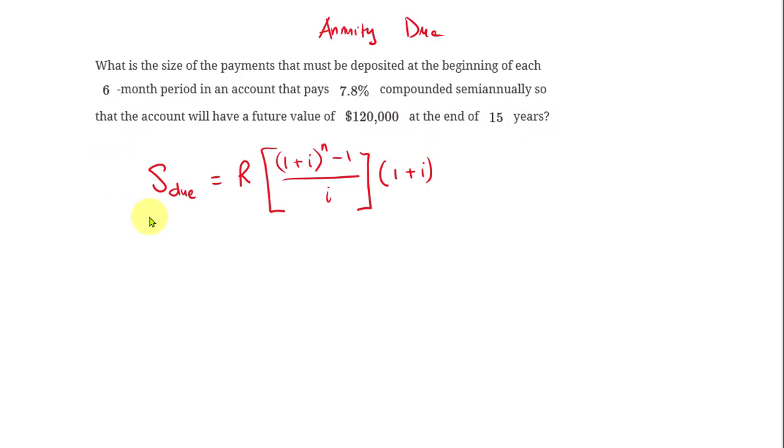We know that we have a formula for the future value of the annuity as due is equal, the future value equals R, R is the regular payment, and 1 plus i to the n power minus 1 over i, and then multiply 1 plus i.